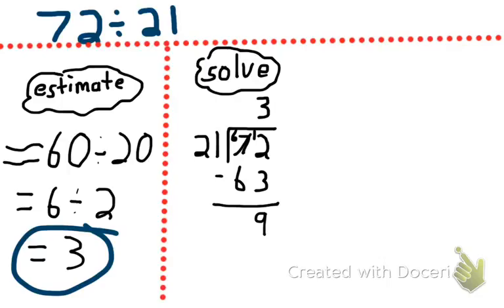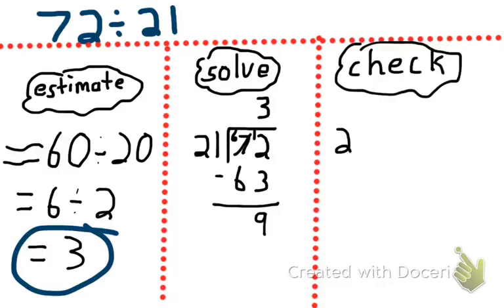All right. So, 21 does go into 72 three times with a remainder of nine. Bam. Now, I'm going to check my math to make sure that my quotient again is accurate.